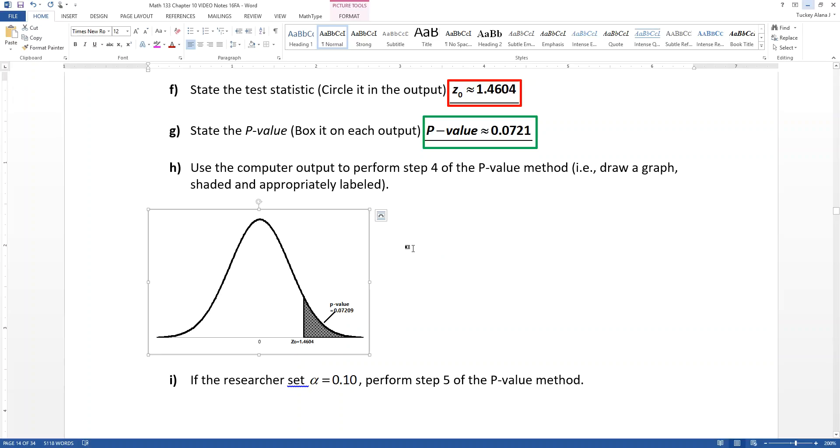Since the curve is already drawn for you, then it becomes important to know how much to shade and label, right? Everything appropriately. So this is Z0, which is your test statistic. And there's your P value labeled.